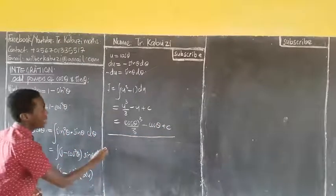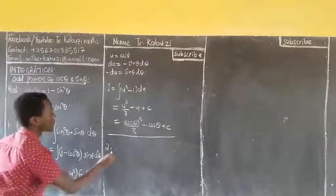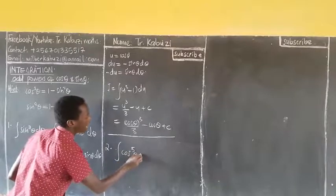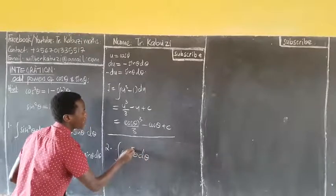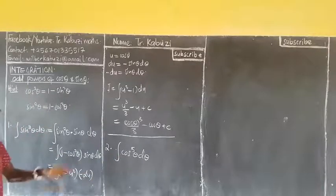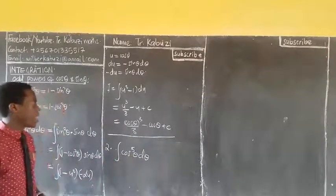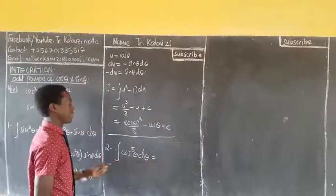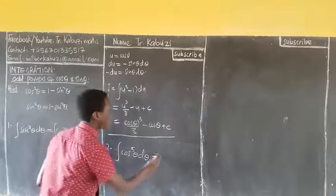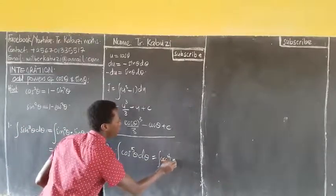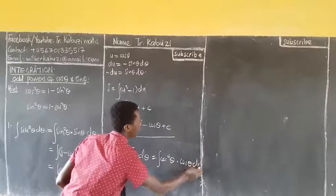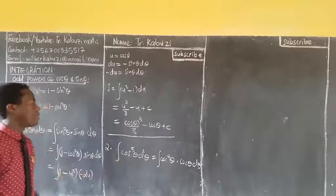Now number 2: if I give you the integral of cos⁵θ dθ. You see that still this power is odd. My interest is to break it. This will be the same as cos⁴θ times cosθ dθ. If I multiply back, I'll be getting cos⁵θ. Right?